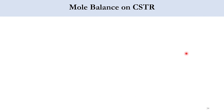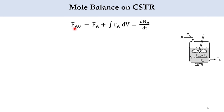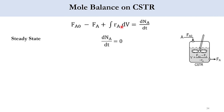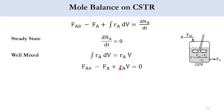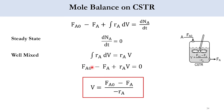Moving to the derivation of the mole balance equation, we know the general mole balance equation for reactant A: FA0, which is the initial flow rate at the entrance, minus FA, the flow rate of species A at the exit, plus the integral of the rate of reaction RA dV, is equal to dN over dt. At steady state there is no accumulation, so that term goes to zero, and since we assumed a well-mixed system, the integral simplifies and becomes RA times V.